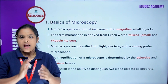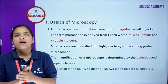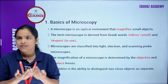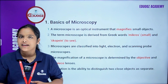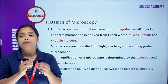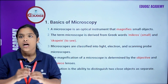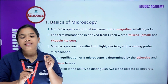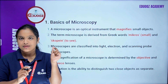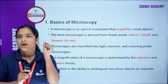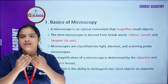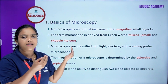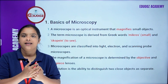Basics of Microbiology. A microscope is an optical instrument that magnifies small objects. Microscopy is derived from the Greek word: 'micros' means small, and 'scoping' means to see.